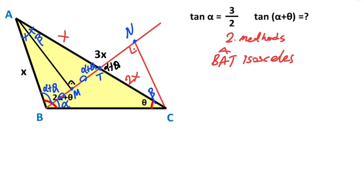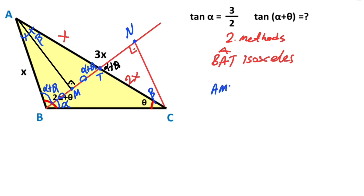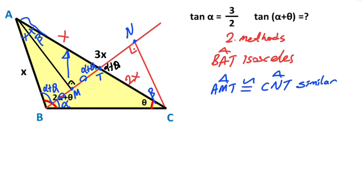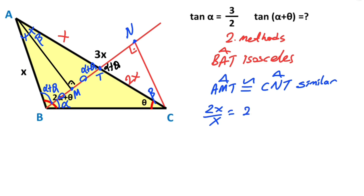If you notice that this triangle and this triangle are similar. Right triangle AMT and triangle CNT are similar. The similarity ratio between these two triangles is equal to x over 2x, or 2x over x.